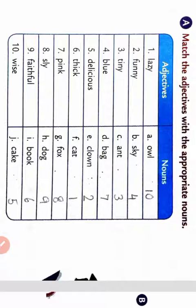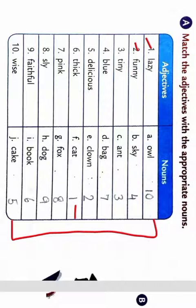That is match the adjectives with the appropriate nouns. So let's see. Question number 1 is lazy. What is lazy? Lazy is cat. Then number 2 is funny. Funny is clown. Clown means joker. Third is tiny. What is tiny? Tiny is ant. Tiny means small.